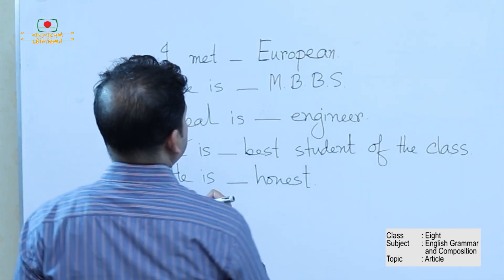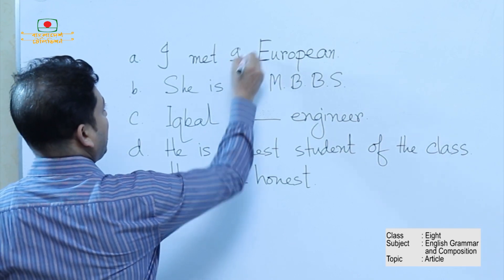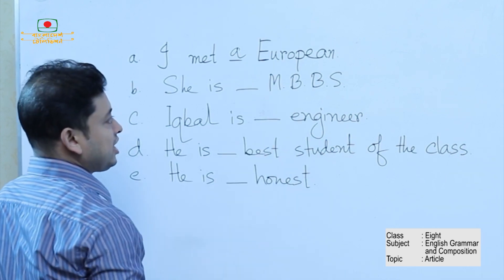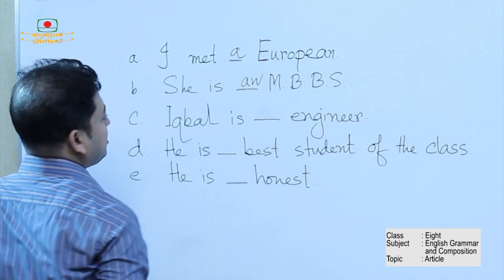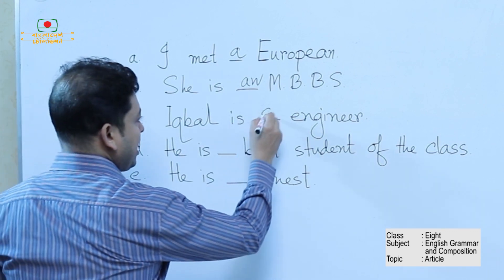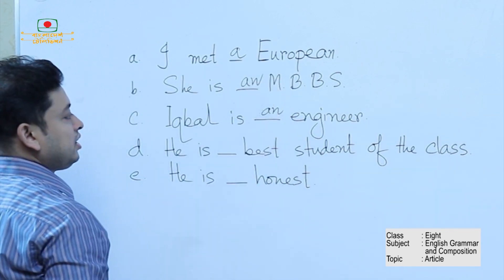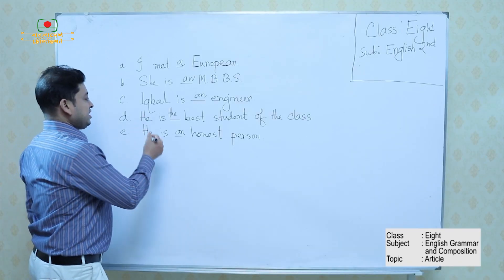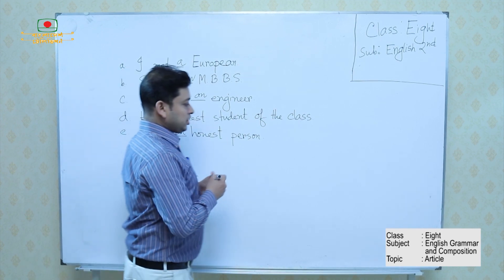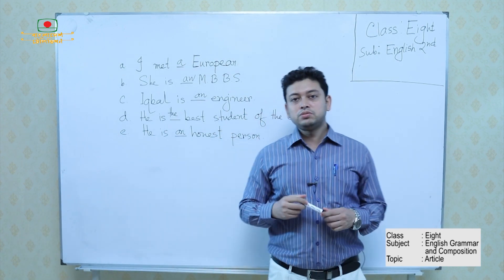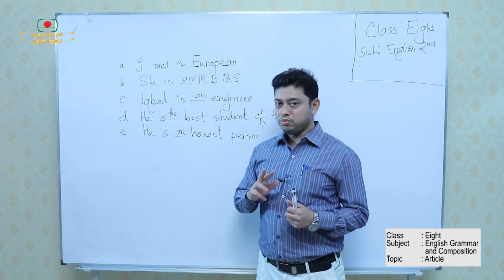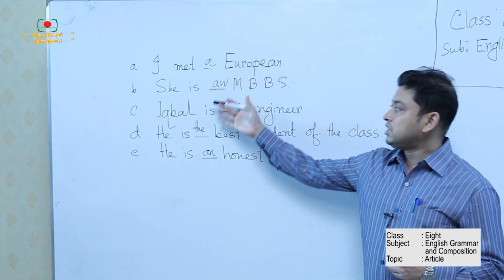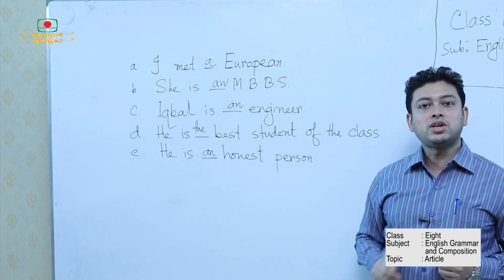The first example is 'I met' — the answer will be A. The second is 'She is MBBS' — this is an abbreviated form, the answer will be AN. 'Iqbal is an engineer.' 'He is the best student of the class.' Number five is 'He is an honest person.' These five sentences actually give five different rules on articles.